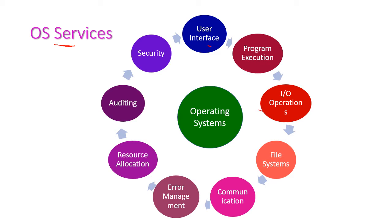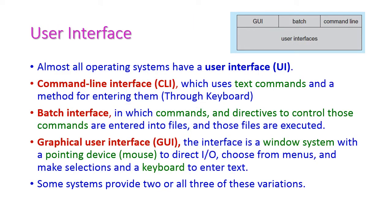The first service is user interface. Almost all operating systems provide user interfaces, through which the user can interact with the system. There are three types: command line interface, batch interface, and graphical user interface. In the command line interface (CLI), the user can give only text commands through the keyboard.